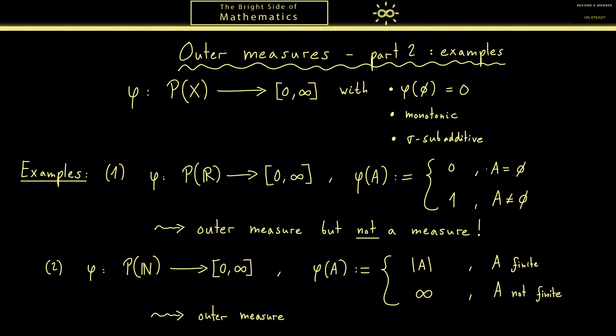Indeed we also recognize that this map is sigma additive, so actually it's an ordinary measure. This is important because the map is the famous counting measure — the name tells you what to do: you count elements. In fact this one is very important because integration with respect to this measure gives you normal sums and series.